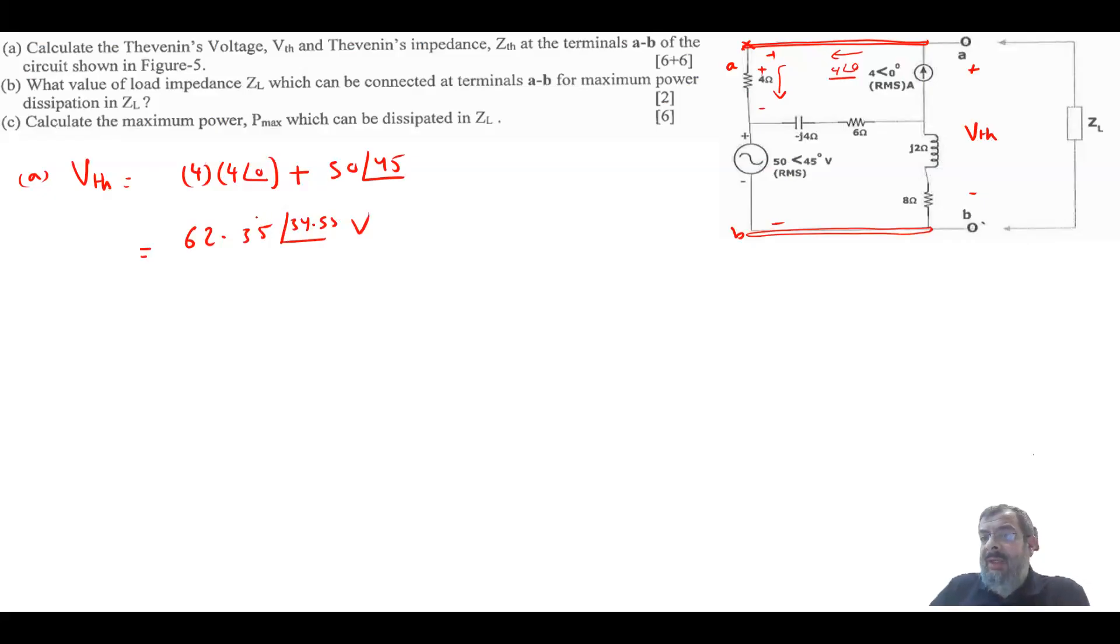How about Z Thevenin? Now this basic circuit has only independent sources. So to find Z Thevenin, there are two different ways. There is the generic way, which you find the short circuit here. Find I short circuit current. Then your Z Thevenin would be V Thevenin divided by I short circuit. And I have at least one question using this approach. However,